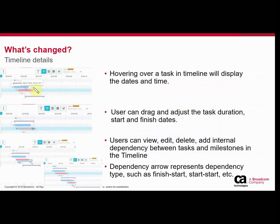You can do different types of interactions against tasks in the timeline view. Hovering over a specific task will display the date and time for that task. You can drag one of the two ends of a task bar to change its duration. You can drag the whole task to change its start and finish dates, shifting the entire task. You can select a dependency and delete it, or add a new dependency between tasks. The types of dependency you can add are start-to-finish, finish-to-finish, start-to-start, and finish-to-start.